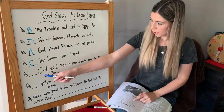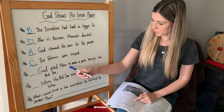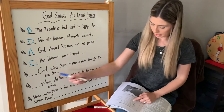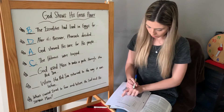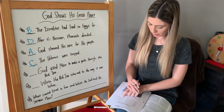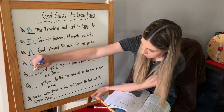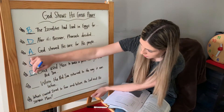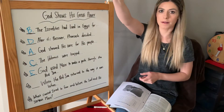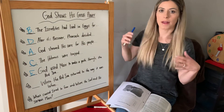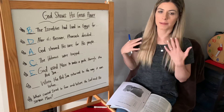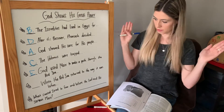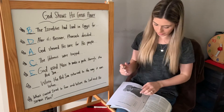Next: God used Moses to make a path through the Red Sea. The answer is E, with his rod. Moses had to hold up his rod, and through that and through the east wind, God's power went through it and separated the Red Sea.